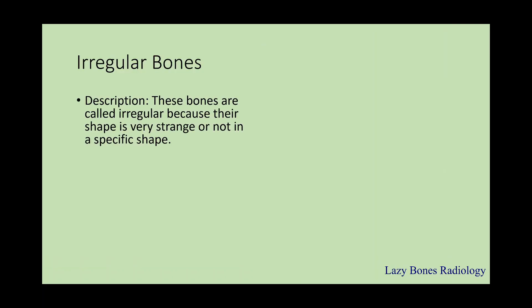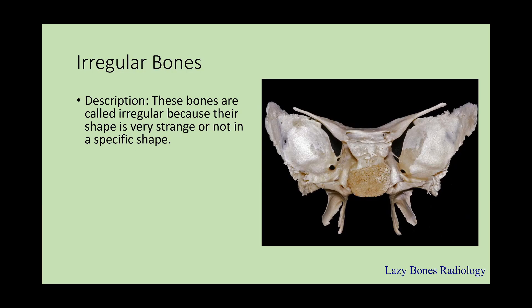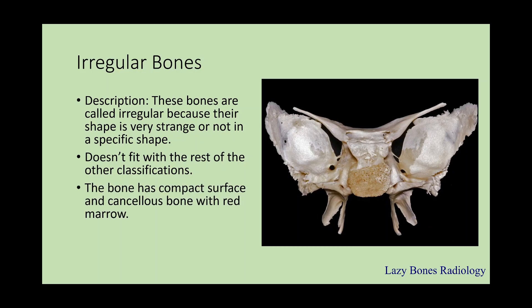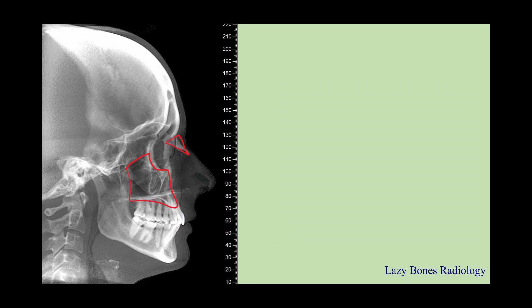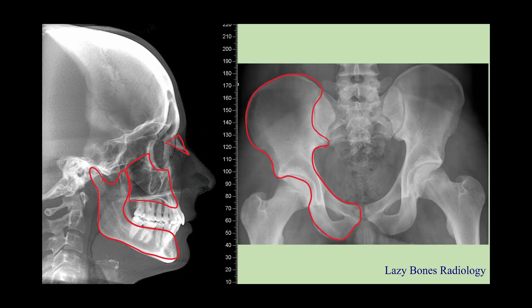Irregular bones are called irregular because of their unusual shape — they do not fit the same classifications as the previous ones. As you can see here on the right hand side, this is the sphenoid bone within the skull. These bones have compact surfaces and cancellous bone with red marrow. Examples include the vertebrae, bones in the pelvis, and the face. As you can see here on the lateral skull, you can see the different shapes and sizes of the facial bones, and also the irregular bones in the pelvis and vertebral bodies.